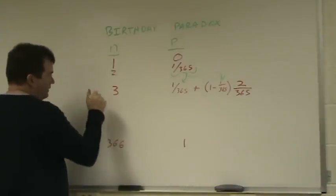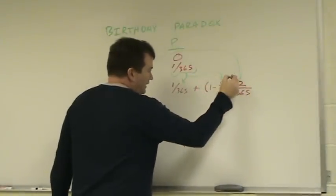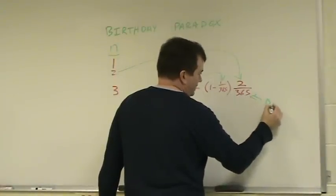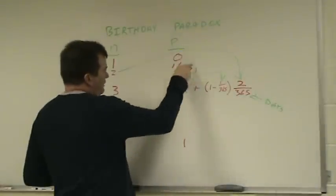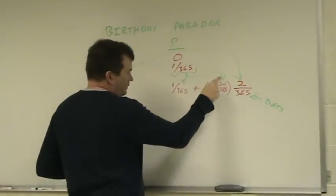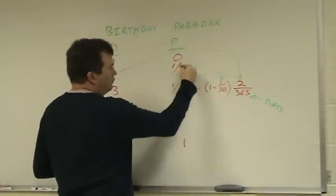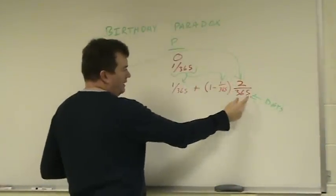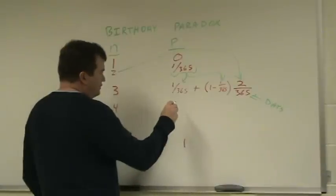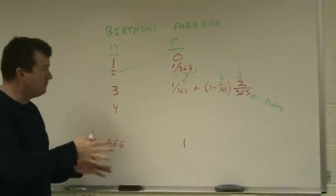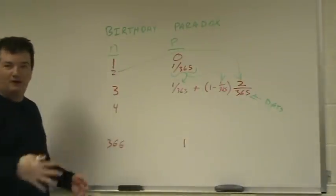There's a pattern: the previous row's probability carries forward; we subtract it from 1 and multiply by the number of people already in the room divided by 365. For N=4, we take whatever the total became for 3 and do that number plus (1 − that number) × (3/365). We have a recursive pattern.